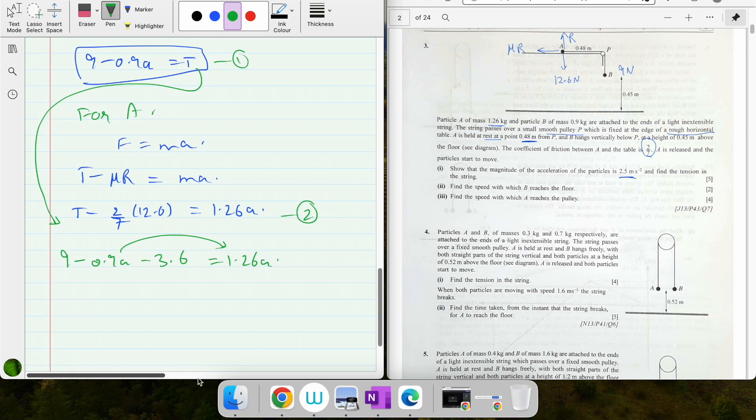Meanwhile, 9 minus 3.6 is 5.4, and that goes on the other side and gets added: 1.26 plus 0.9 is 2.16a. Acceleration equals 5.4 divided by 2.16. We get 5/2 which is 2.5, so acceleration is 2.5 meters per second squared.